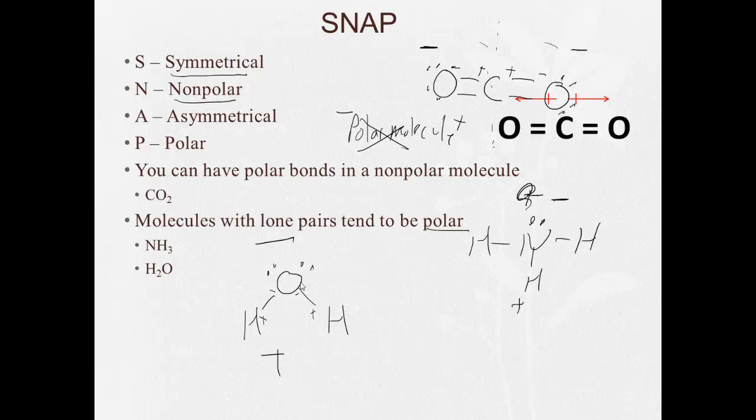Positive end, negative end, polar. This is asymmetrical, polar. So SNAP: symmetrical, nonpolar. Carbon dioxide is symmetrical, so it is nonpolar. Water is asymmetrical, so it is polar.